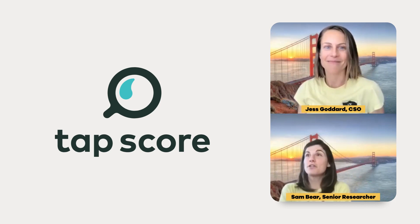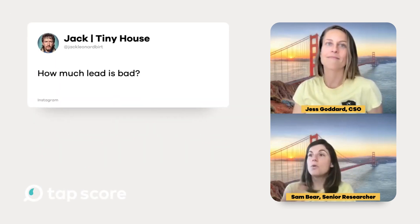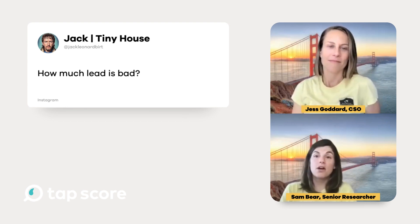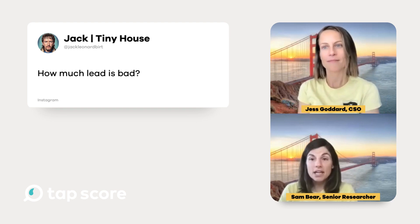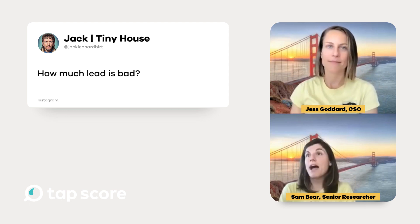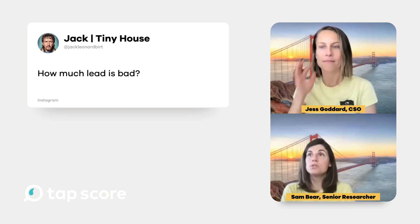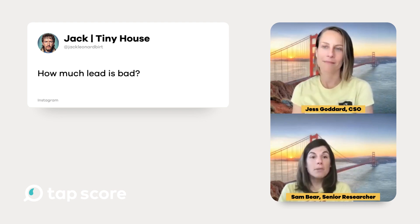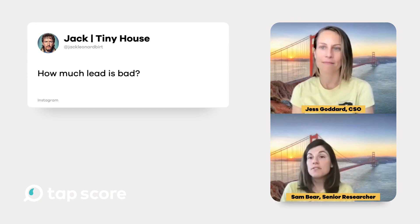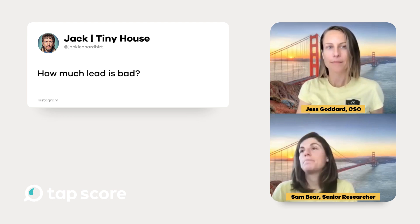We're excited to respond to some of your questions today about water quality, specifically about lead in your drinking water. These came to us mostly through the TAPSCORE Instagram feed. So the first question comes from Jack: how much lead is bad? We're focusing on lead in drinking water, though there are other sources like paint and dust. Lead is a heavy metal and its impacts are pretty devastating. We focus on children because they're the most vulnerable to lead toxicity. The primary impacts are developmental — it affects your brain and nervous system, and for children there can be learning issues and impacts on IQ.